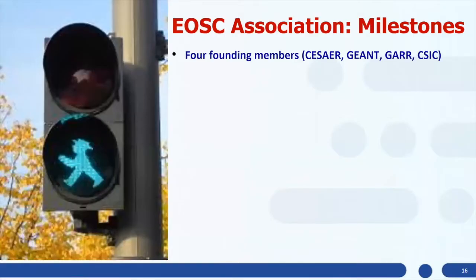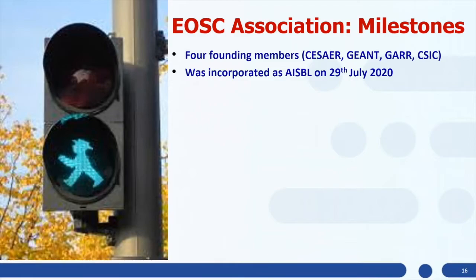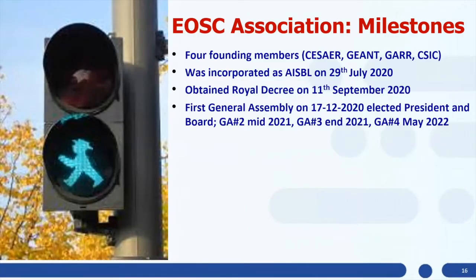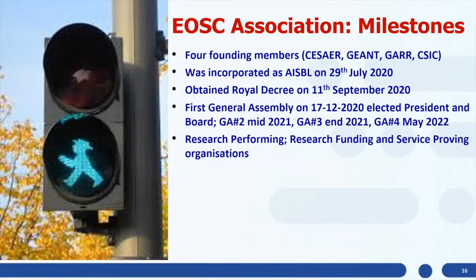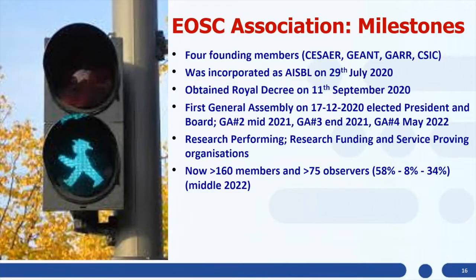It's an exciting journey. The milestones so far: there were four founding members — just technical, they have no extra rights. It was incorporated as an AISBL in July 2020, obtained the royal decree in September. The first general assembly was in 2020, when I was elected president and we elected a board of eight other board members. We've now had four general assemblies, the last one in May. Membership is almost exclusively research performing organizations, research funding organizations, and research service providing organizations — now more than 160 members and 75 observers.